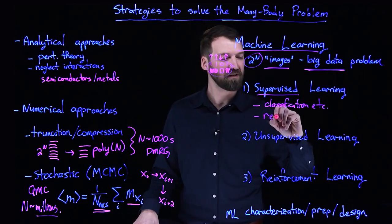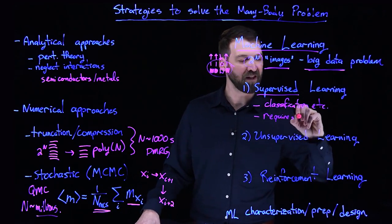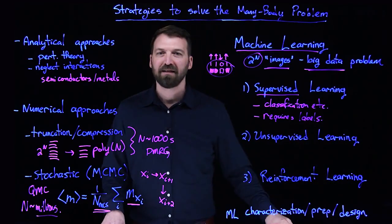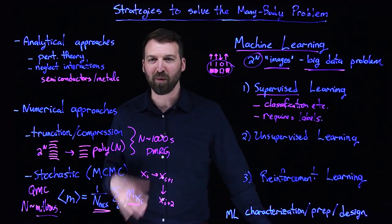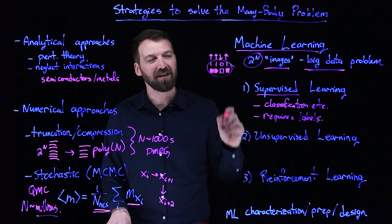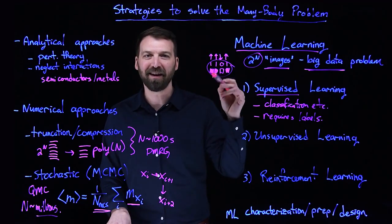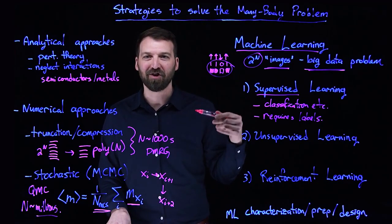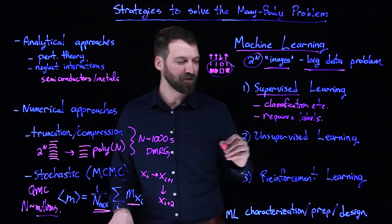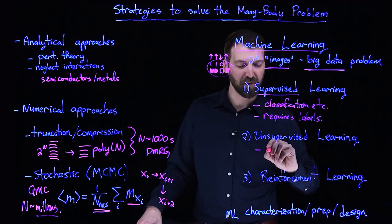This, of course, requires labels, a priori labels. In many cases in the quantum many-body problem where we don't have labels, we would turn to unsupervised learning. Unsupervised learning might be looking at a quantum wave function and trying to find clustering or associative rules that govern the behavior.